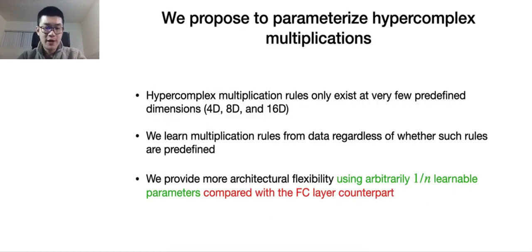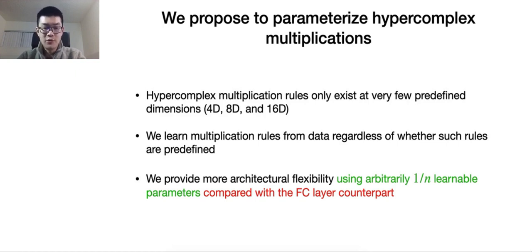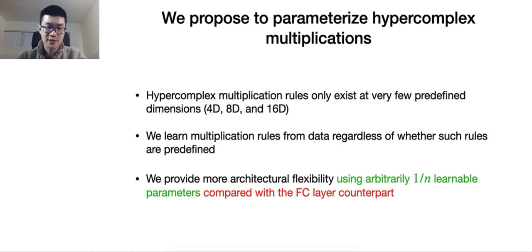However, beware that hyper-complex multiplication rules only exist at very few predefined dimensions, such as 4D, 8D, and 16D. In view of this, we propose to learn the multiplication rules from data regardless of the dimension. By doing this, we can provide more architectural flexibility using arbitrarily one-over-n learnable parameters compared with the FC layer counterpart.